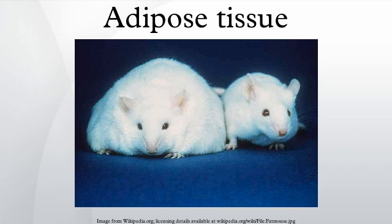Ectopic fat is the storage of triglycerides in tissues other than adipose tissue that are supposed to contain only small amounts of fat, such as the liver, skeletal muscle, heart, and pancreas. This can interfere with cellular functions and organ function and is associated with insulin resistance in type 2 diabetes. It is stored in relatively high amounts around the organs of the abdominal cavity but is not to be confused with visceral fat. The specific cause for the accumulation of ectopic fat is unknown; it is likely a combination of genetic, environmental, and behavioral factors involving excess energy intake and decreased physical activity. Substantial weight loss can reduce ectopic fat stores in all organs, associated with an improvement of organ function.